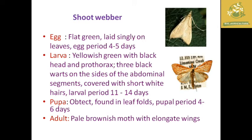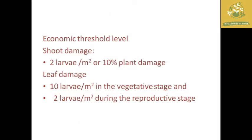You can identify the shoot webber with the following characteristics: the egg is flat and green, laid singly on the leaves, with an egg period of around four to five days. The larvae are yellowish-green with a black head and dark thorax. The pupa is an obtect pupa found in leaf folds, with a pupal period of around four to six days. The adult is a pale brownish moth with elongated wings.